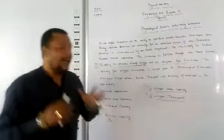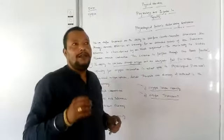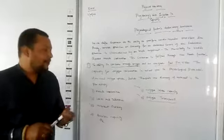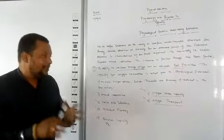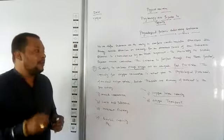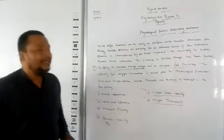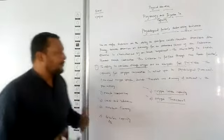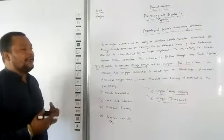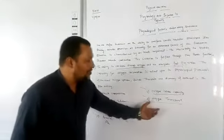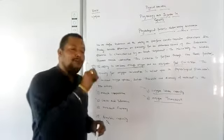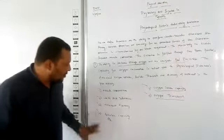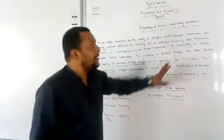Oxygen intake capacity directly depends upon the ability of your lungs — the number of alveoli, size of lungs, and everything related. If the lungs are not able to intake maximum oxygen, the body is not able to work properly. The second point is oxygen transport — after intaking the adequate amount of oxygen, how this oxygen is transported from the lungs to the heart to fuse with the blood and create properly oxygenated blood. So these are the physiological factors determining endurance.